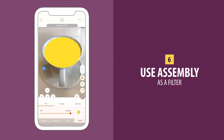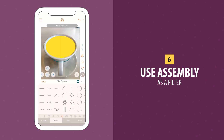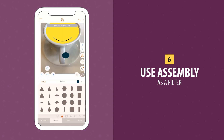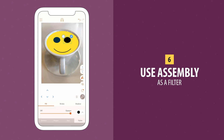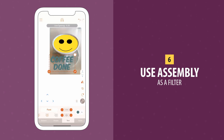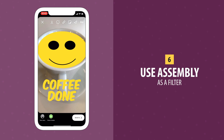Number 6. Instagram Stories has a lot of amazing filters, but what if you want something more individual? Import your photo into Assembly first and then build your bespoke overlays ready for Instagram Stories.